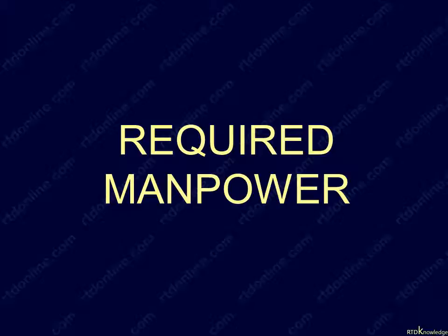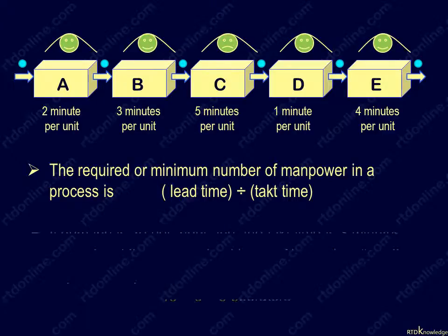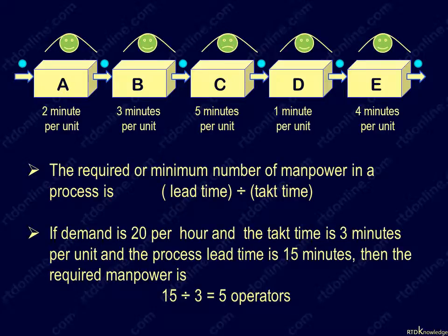We will now learn how to get the required manpower to meet the demand and avoid overstaffing or understaffing. The required or minimum number of manpower in a process is its lead time divided by the TAC time, or required process cycle time. In our previous example, the TAC time is 3 minutes per unit. Since the process lead time is 15 minutes, the required manpower comes out as 15 divided by 3, or 5 operators.